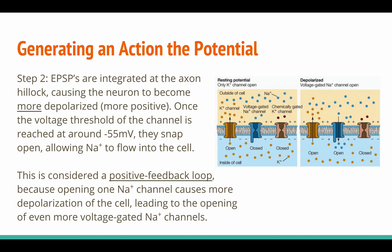Next, EPSPs are integrated at the axon hillock, causing the neuron to become more depolarized, or more positive. Once the voltage threshold of the channel is reached at around negative 55 millivolts, they snap open, allowing sodium ions to flow into the cell. This is considered a positive feedback loop, because opening one sodium ion channel causes more depolarization, leading to the opening of even more voltage-gated sodium ion channels.